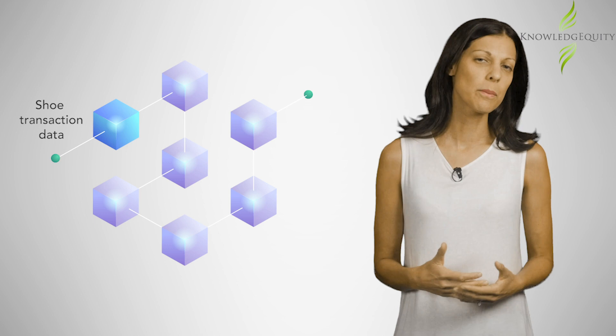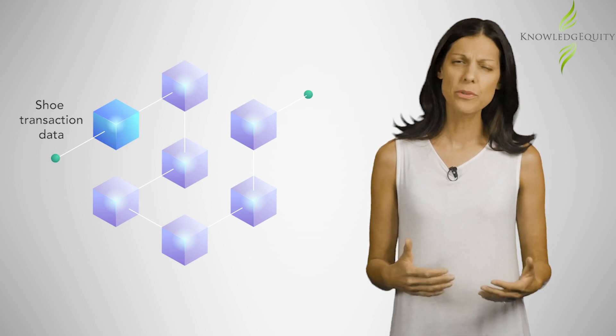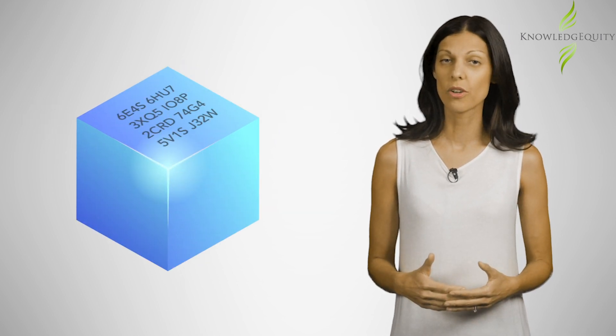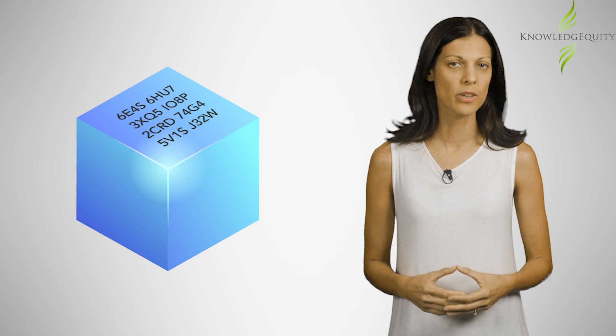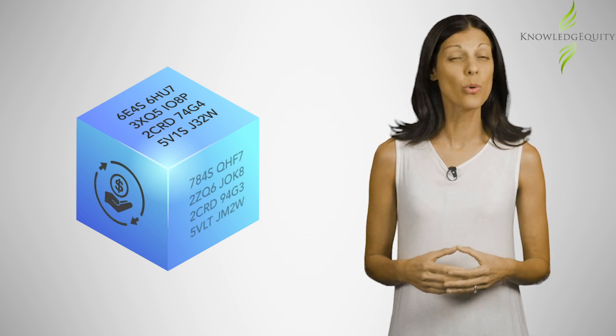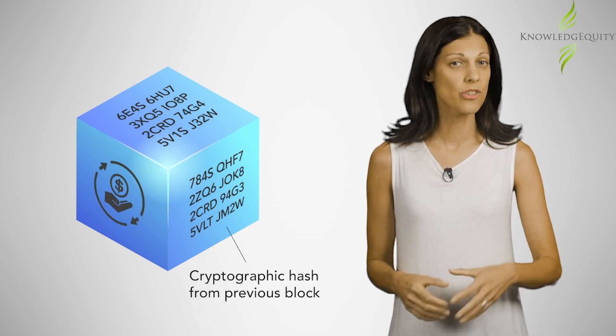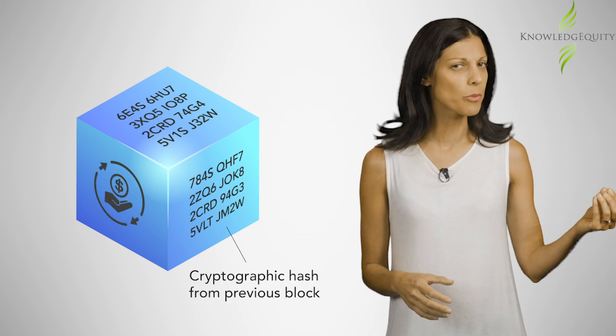As we have established, a cryptographic hash is included in a block, along with its relevant transaction records. It's important to note that each block also contains the hash from the previous block. This makes it difficult for anyone to alter or delete information from a block once it is in a blockchain, particularly hackers.